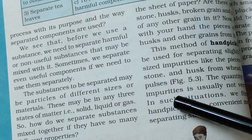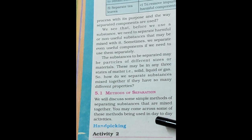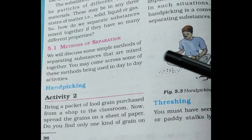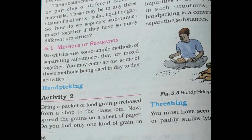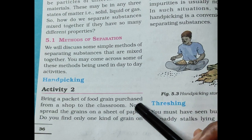Now we will discuss some simple methods of separating substances that are mixed together. You may come across some of these methods in day-to-day activities. The first and most common method is hand picking — for example, separating stones from rice using your hands.